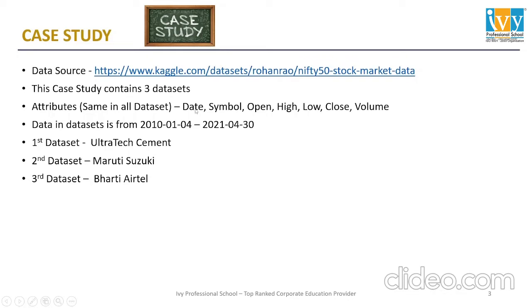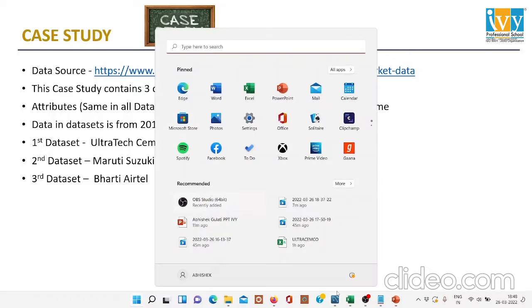The attributes in my datasets are date, symbol, open, high, low, close, and volume. The data in the datasets is from 4th January 2010 till 30th April 2021. The first dataset is of Ultratech Cement, the second is of Maruti Suzuki, and the third dataset is of Bharti Airtel. Let me show you the dataset.